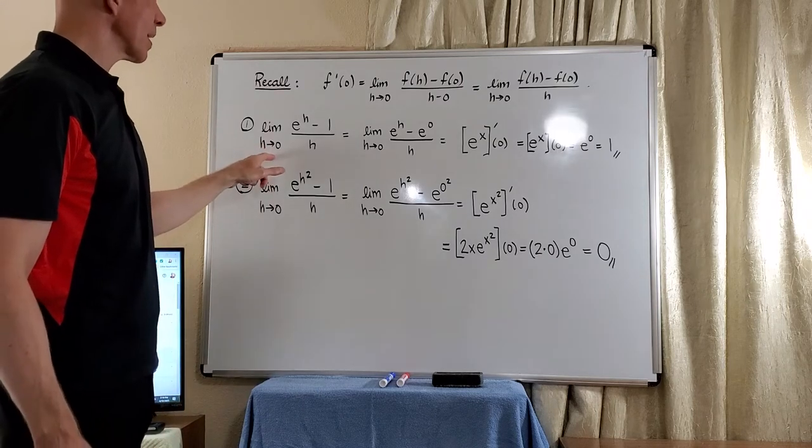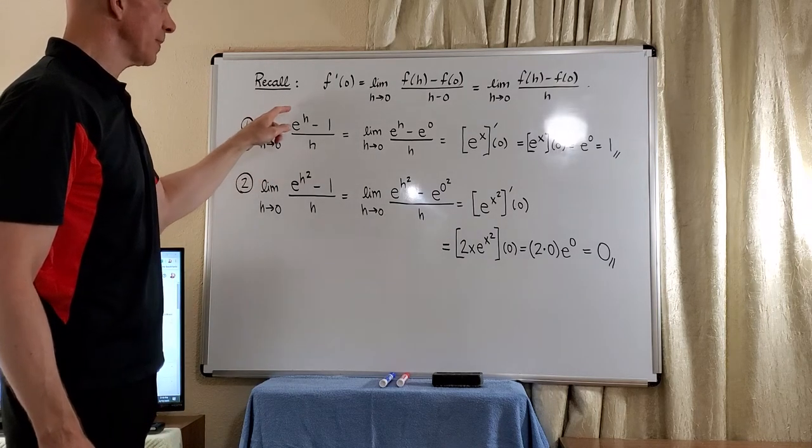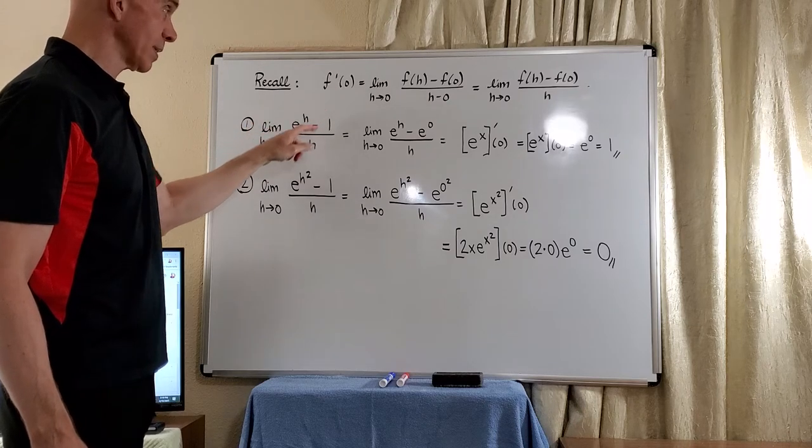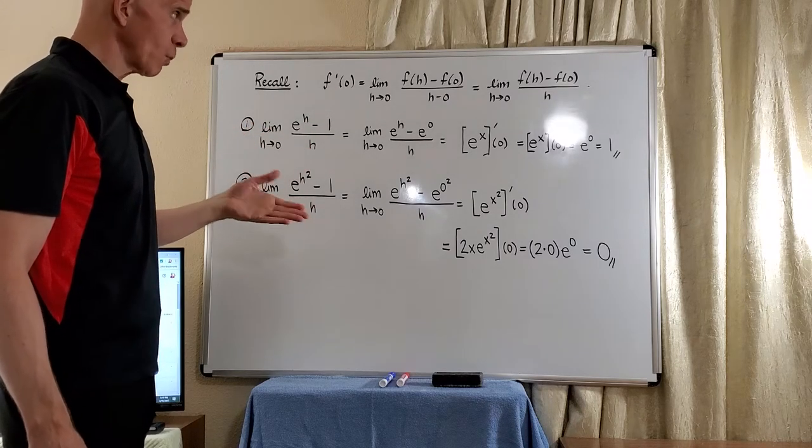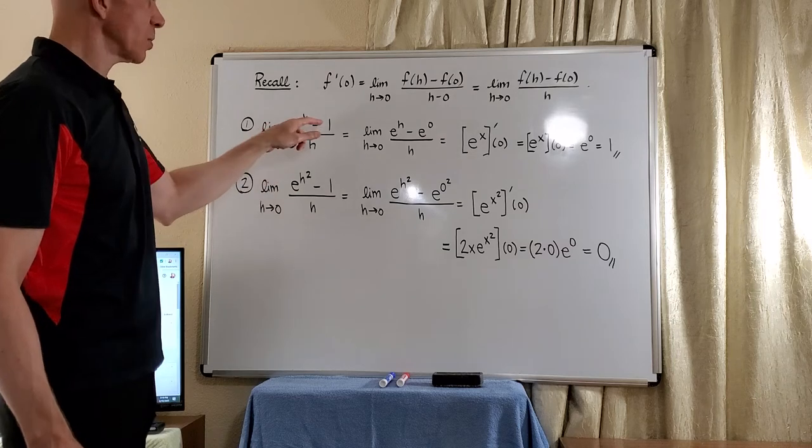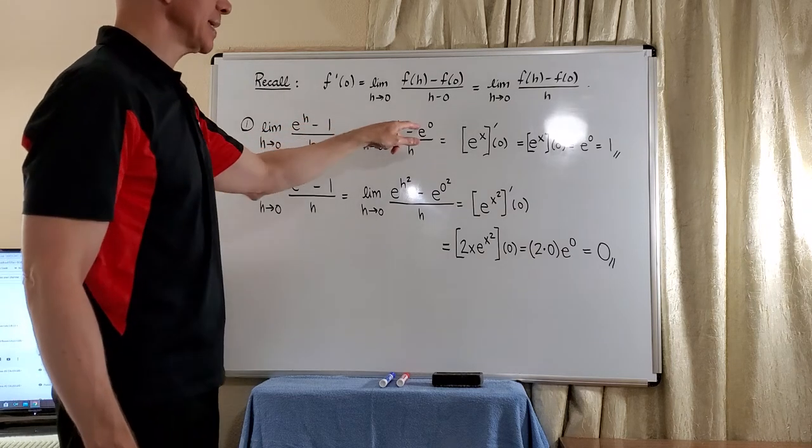So in the first case, you have the limit as h approaches 0 of e to the h minus 1 divided by h. Well, of course, you can read this. You can just go ahead and write 1 as e to the 0.